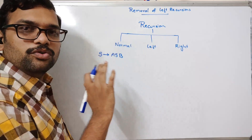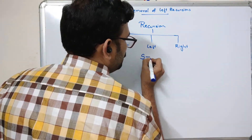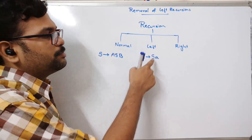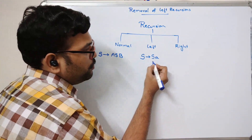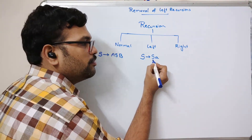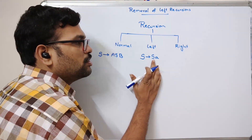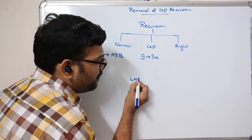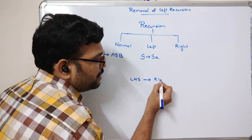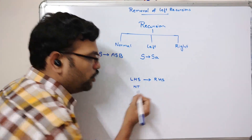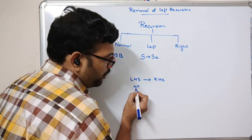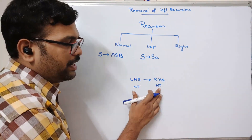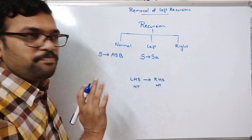Coming to left recursion: on the right hand side, if the same non-terminal is at the leftmost position, it is called left recursion. For example, a production like A → Aα has the non-terminal A on the left hand side and also appears at the leftmost position on the right hand side — that is left recursion.